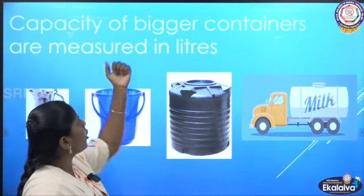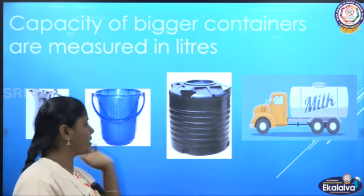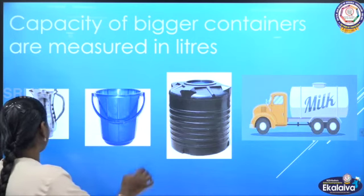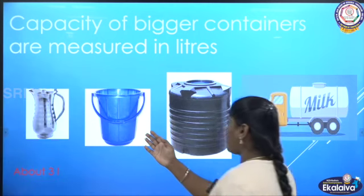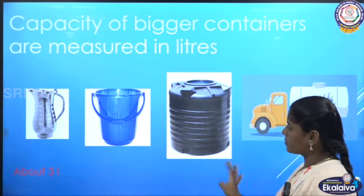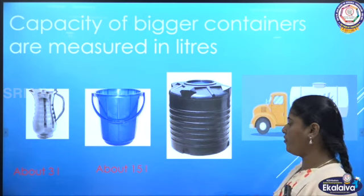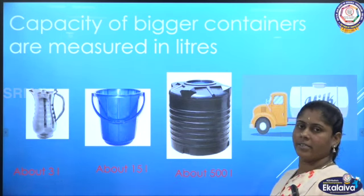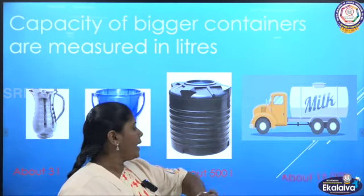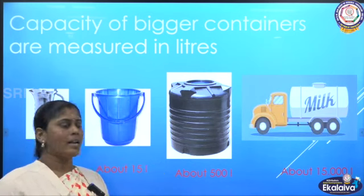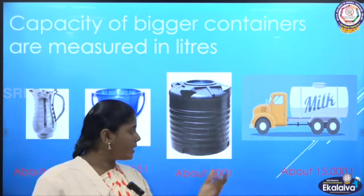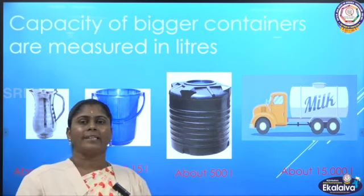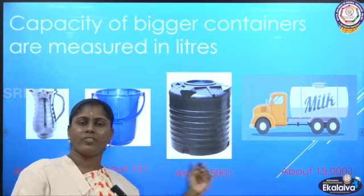The capacity of bigger containers is measured in litres. Here is a water jug — it can hold about 3 litres of water. This is a bucket and its capacity is about 15 litres. This is a water tank and it can hold about 500 litres of water. And this is a tanker — you would have seen tankers carrying oil, petrol, diesel or milk. The capacity of this tanker is about 15,000 litres.